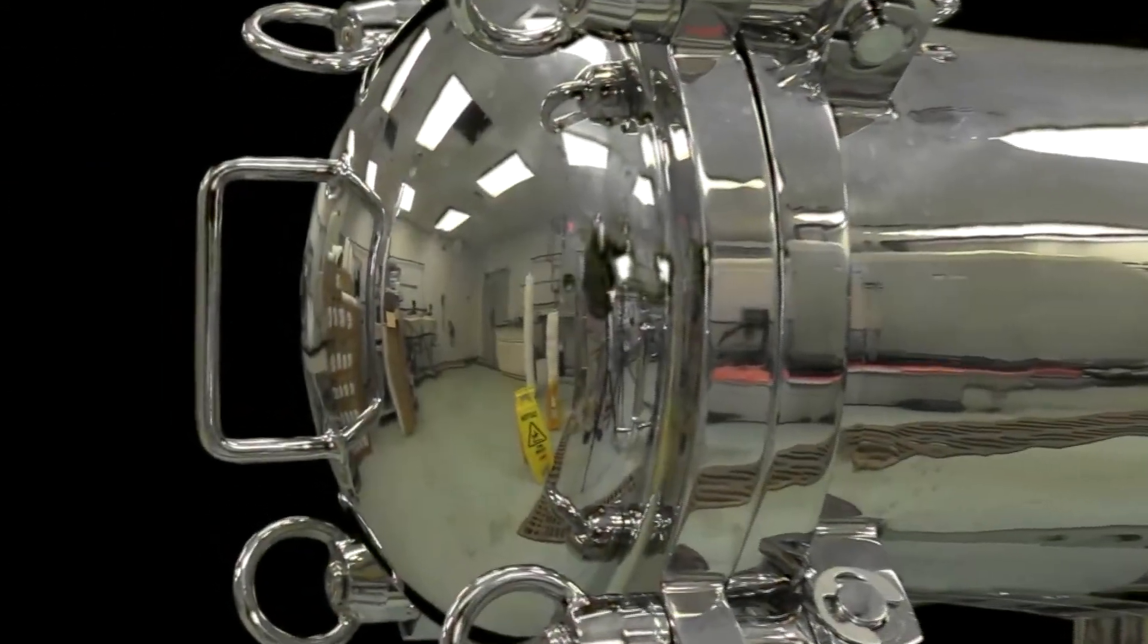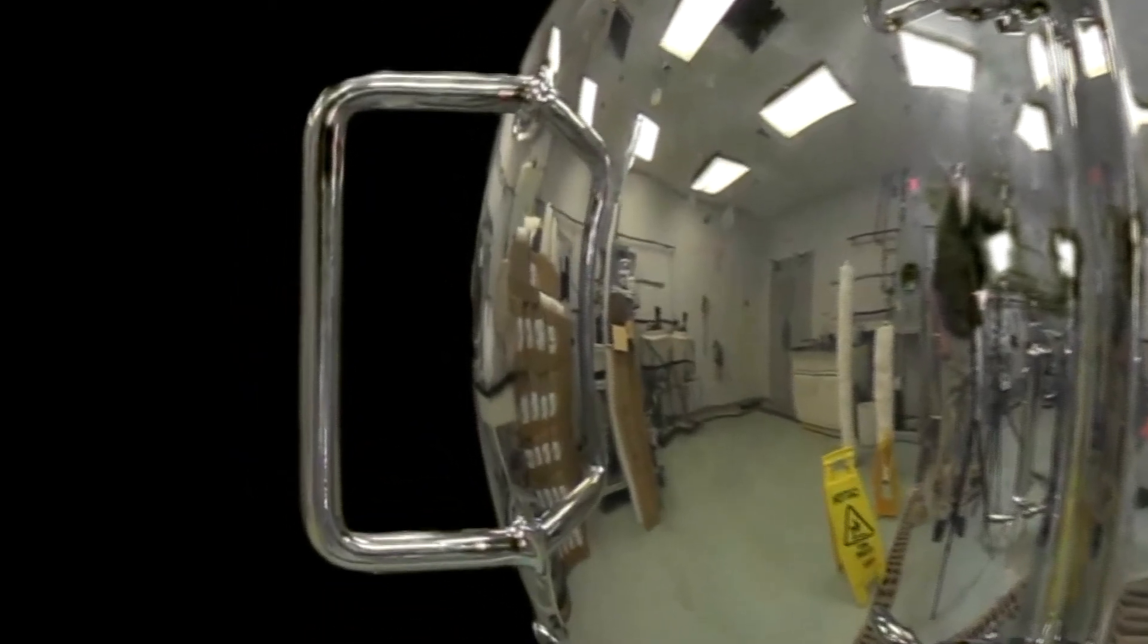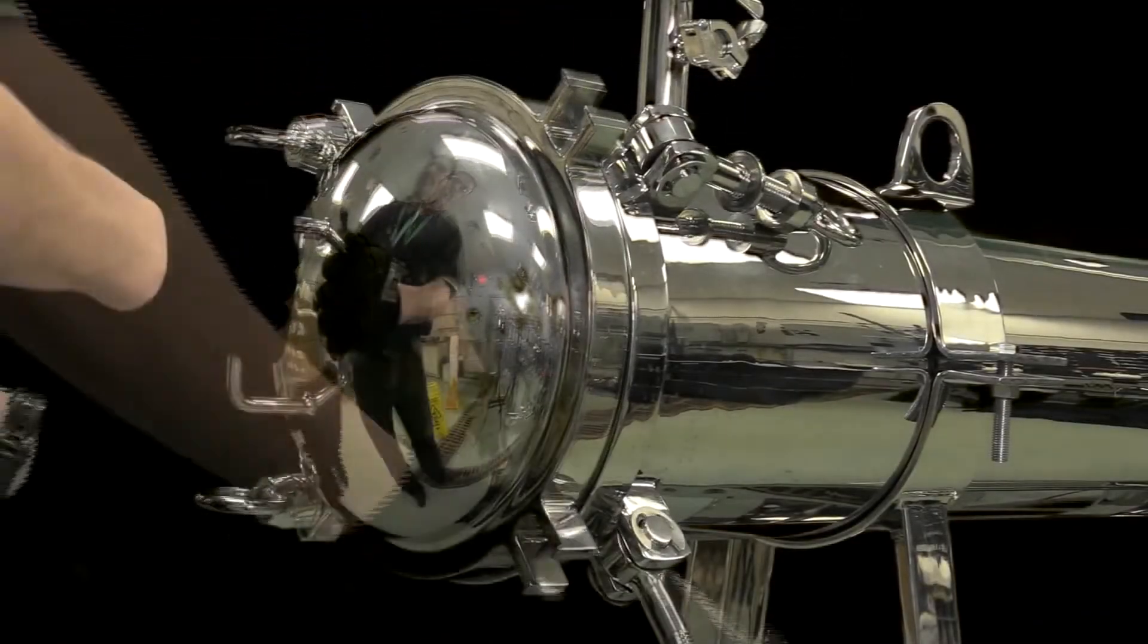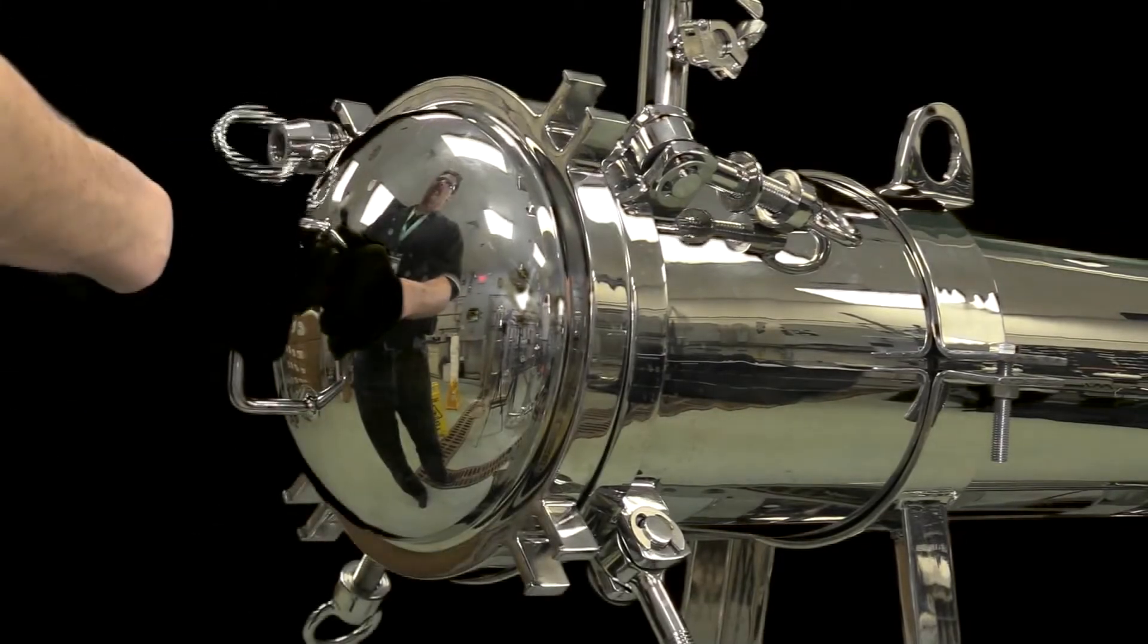First, identify the housing end with the handle attached. Loosen the four clamps on the housing lid. Swing open the housing lid.